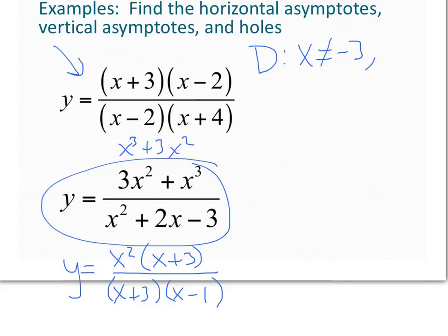Another one that x cannot equal would be positive 1. I'll plug in positive 1 here. 1 minus 1 is 0. 0 times anything is 0 and I don't want to divide by 0. So there's my domain. Moving on.